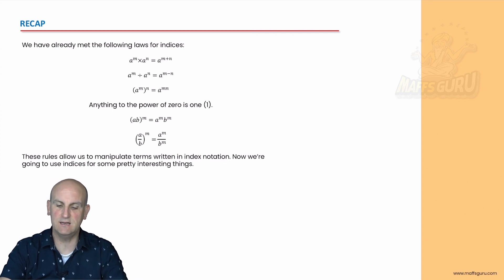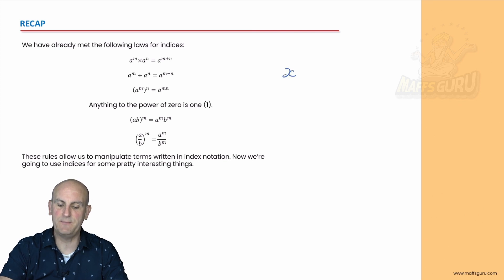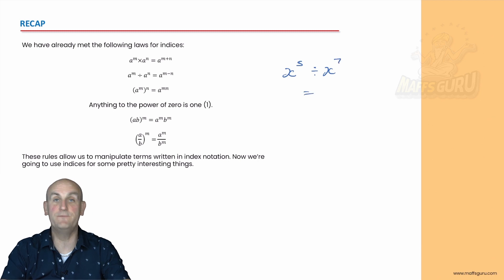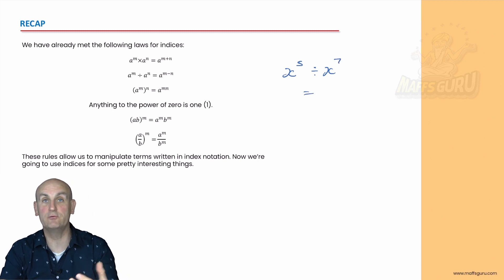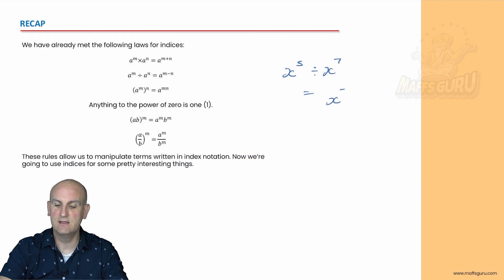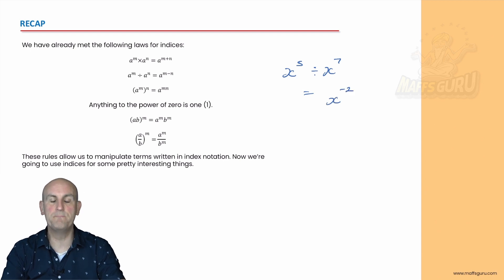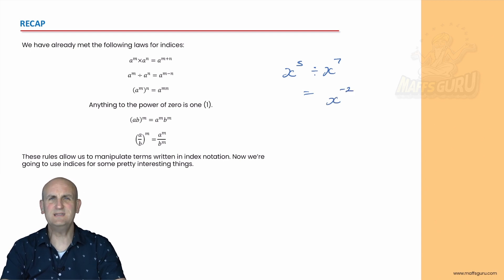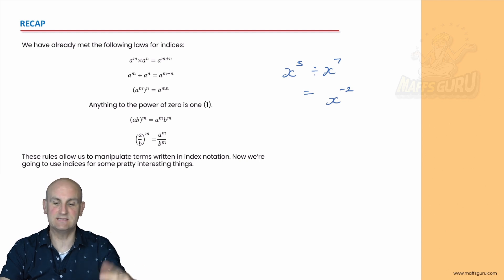We have seen in a previous video that if we did x to the power of five divided by x to the power of seven, if we follow our index rules, you subtract them and that became x to the power of minus two. What does that actually mean? Well, that's the point of this video.